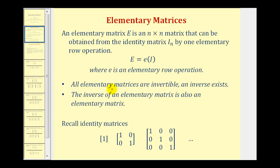All elementary matrices are invertible, meaning their inverse exists, and the inverse of an elementary matrix is also an elementary matrix. For review, here are some identity matrices. Notice how the main diagonal from the upper left to the lower right are ones, and all other elements are zero.